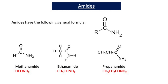Methanamide has H, C double bond O, and NH2. Ethanamide has a CH3 attached to a C double bond O and an NH2. And propanamide is CH3, CH2, C double bond O, NH2. All of them have the amide group, which is C double bond O, NH2.